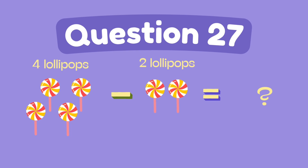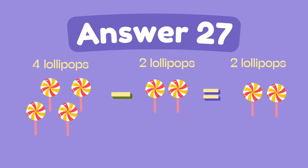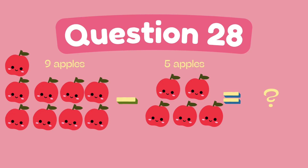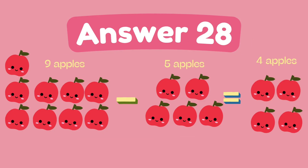What is 4 minus 2? The answer is 2. What is 9 minus 5? The answer is 4.